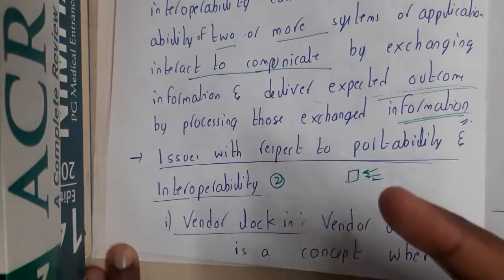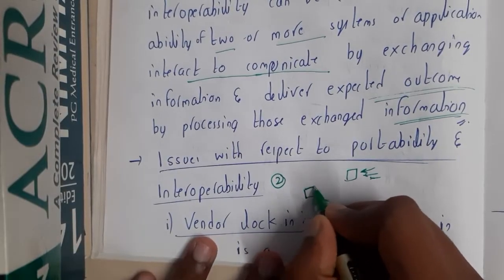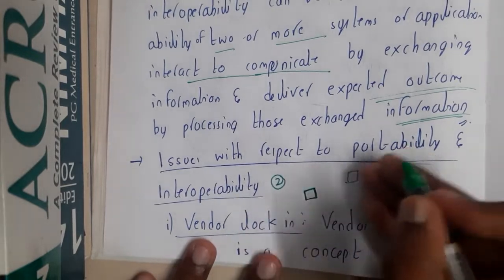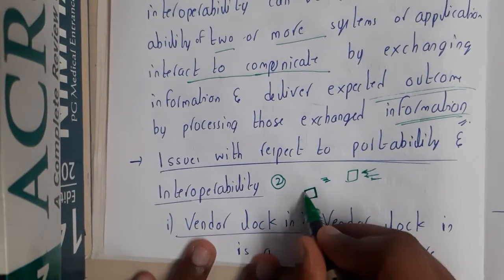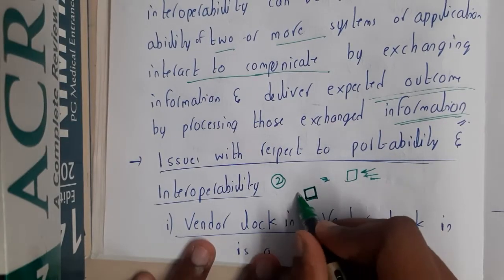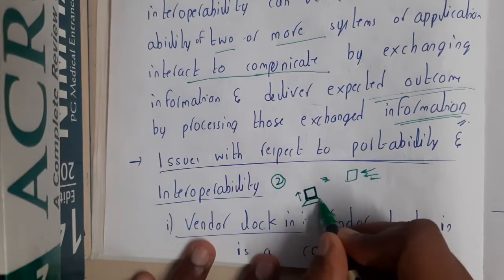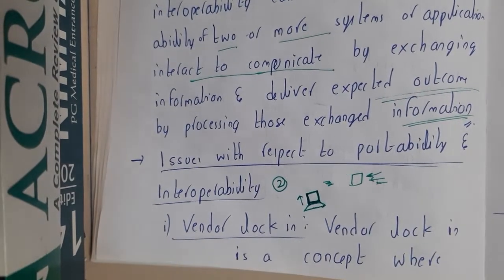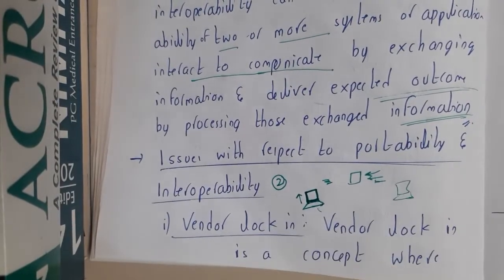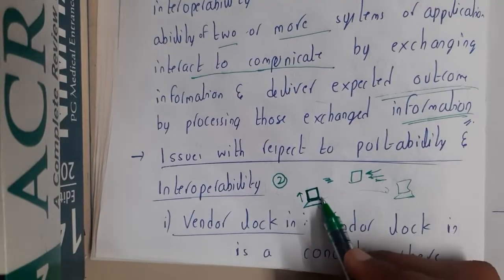The concept of vendor lock-in works like this: assume that you started your business with a small cloud provider. He is using some formatting of storage and certain standards. After a few years your business started growing, and this cloud service provider is not giving you the best anymore, so you want to upgrade or change to some other cloud provider.